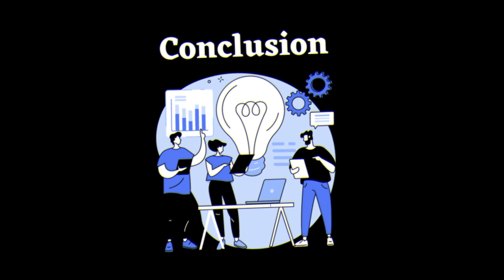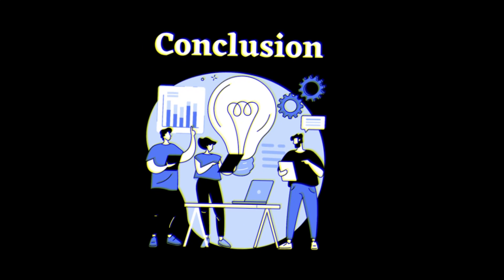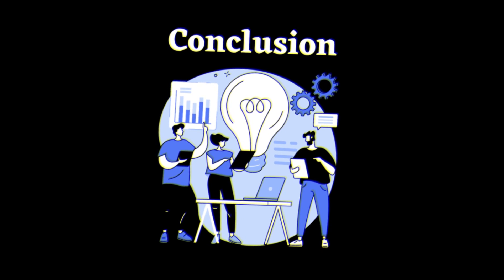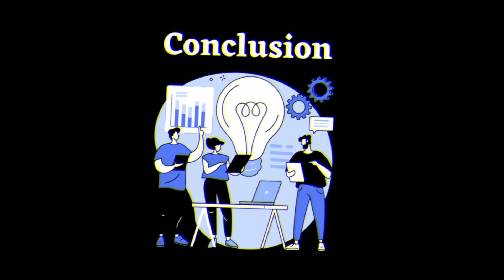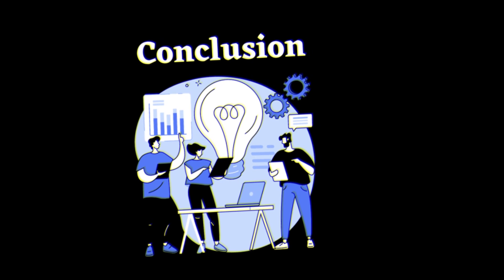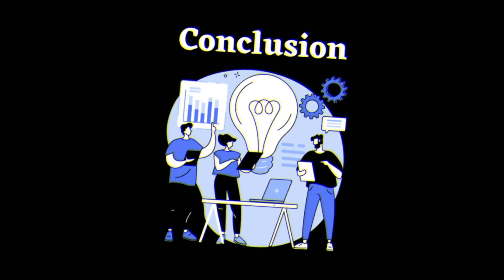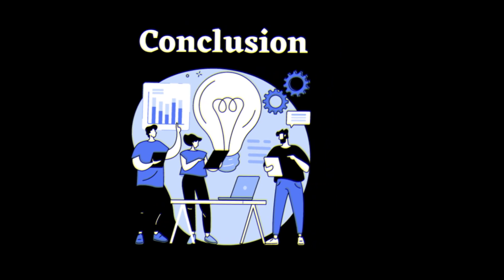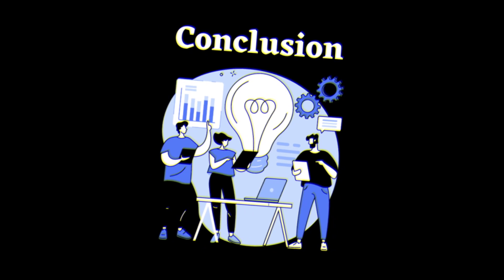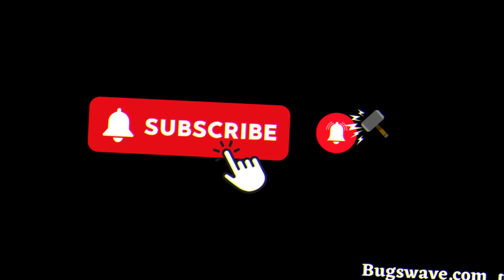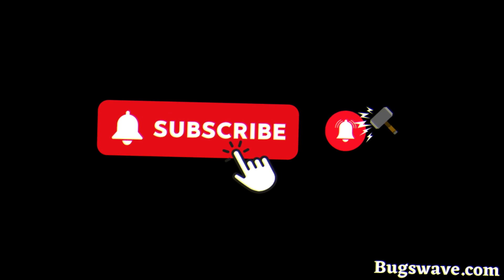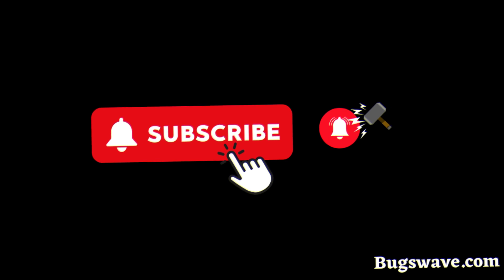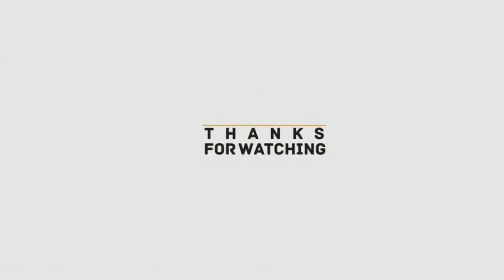As we wrap up our journey through the Google Partner Setup app — from downloading to troubleshooting and addressing the disablement question — we hope you've gained a comprehensive understanding of its role in the Google ecosystem. If you found this video helpful, don't forget to hit the like button, subscribe for more tech insights, and share your thoughts in the comments below. Until next time, this is BugsWave, signing off.